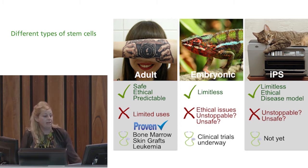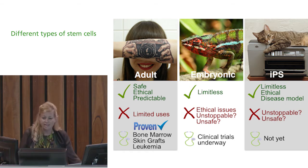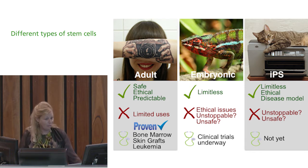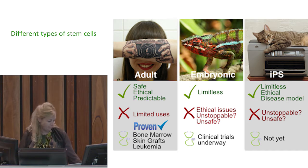Then there are what we call embryonic stem cells. You could think of them like chameleons — a cartoon said a parent told the embryonic stem cell 'you can be anything you want when you grow up.' That's what embryonic stem cells are: they're capable of being any kind of cell, so they're chameleons that can change from one kind to another.